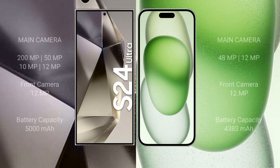The Samsung Galaxy S24 Ultra features a quad rear camera setup: 200MP + 50MP + 10MP + 12MP, and a 12MP front camera. The iPhone 15 Plus features a dual rear camera setup: 48MP + 12MP, and a 12MP front camera.